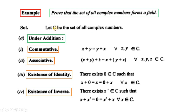Now we check whether (C, +) is an abelian group. Under addition, commutative law holds — if we add any two complex numbers, the sum is again a complex number, so C is closed under addition. C کے کوئی دو elements لے کر جمع کریں تو complex number ملتا ہے، یعنی closure property exist کرتی ہے۔